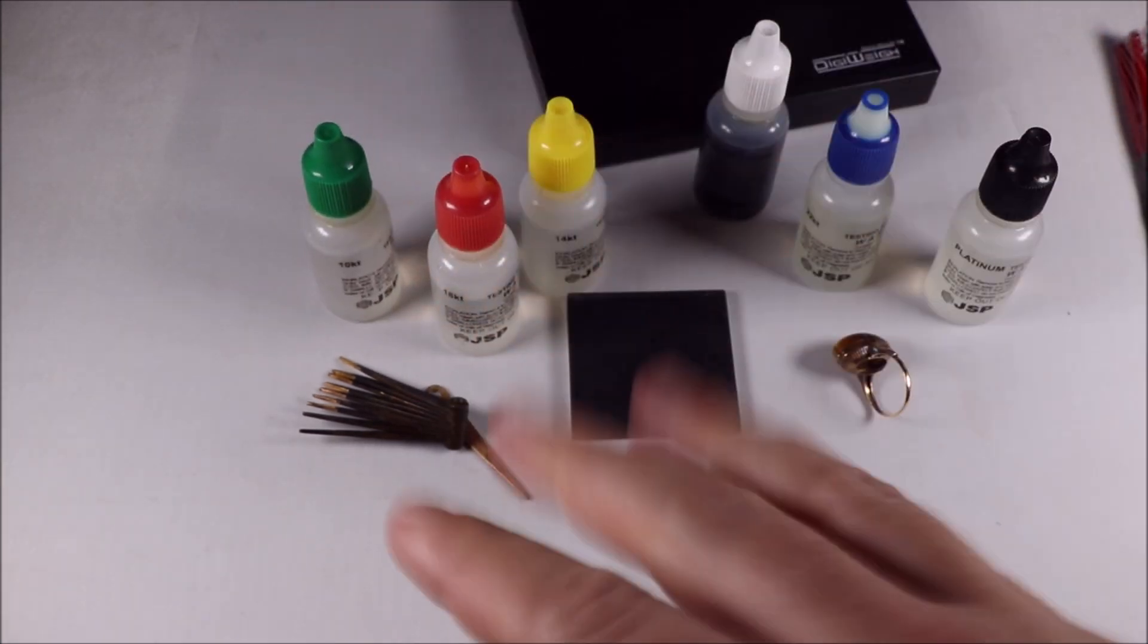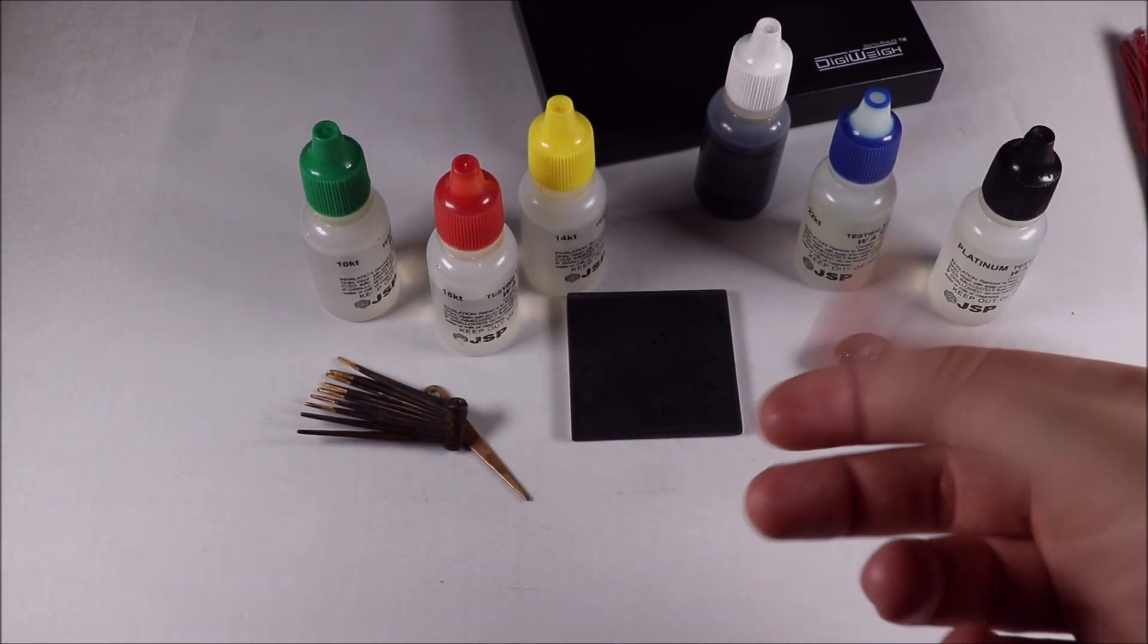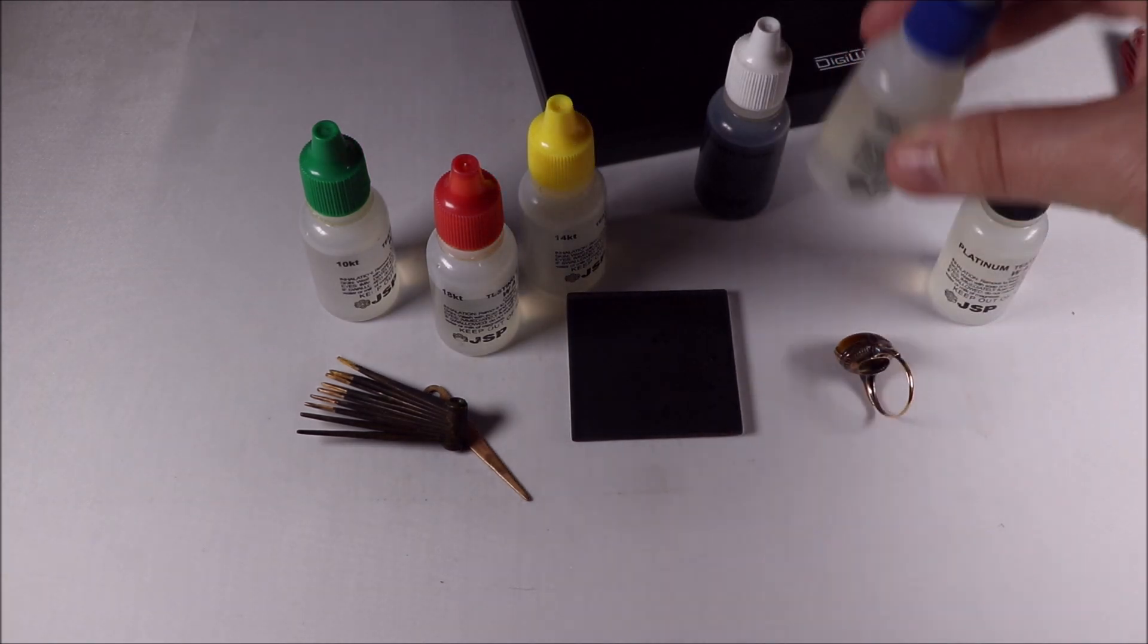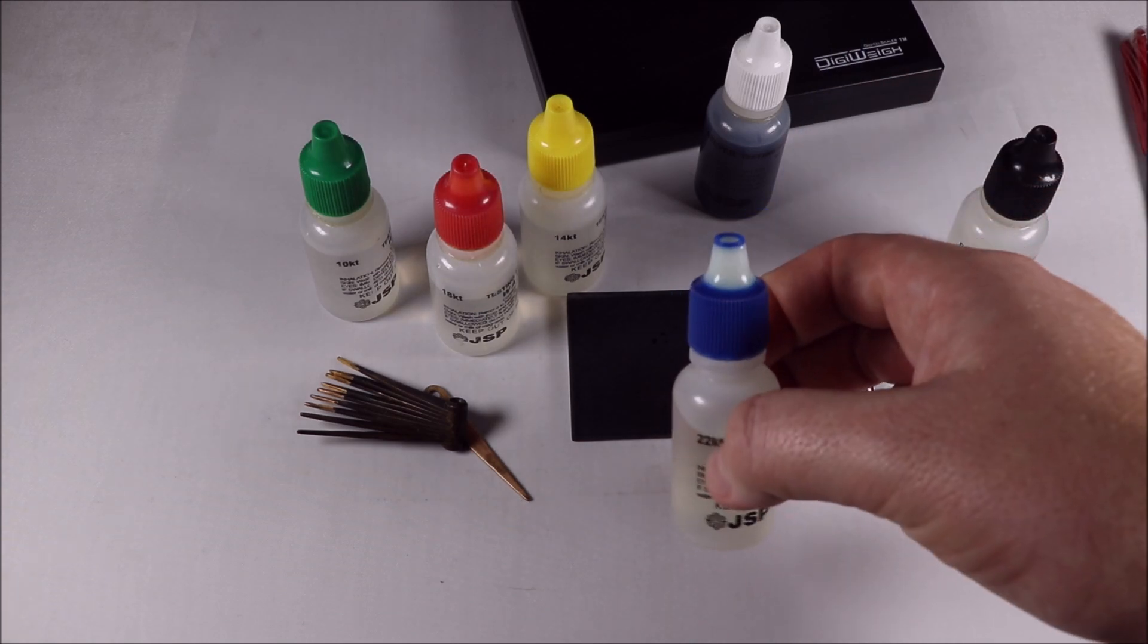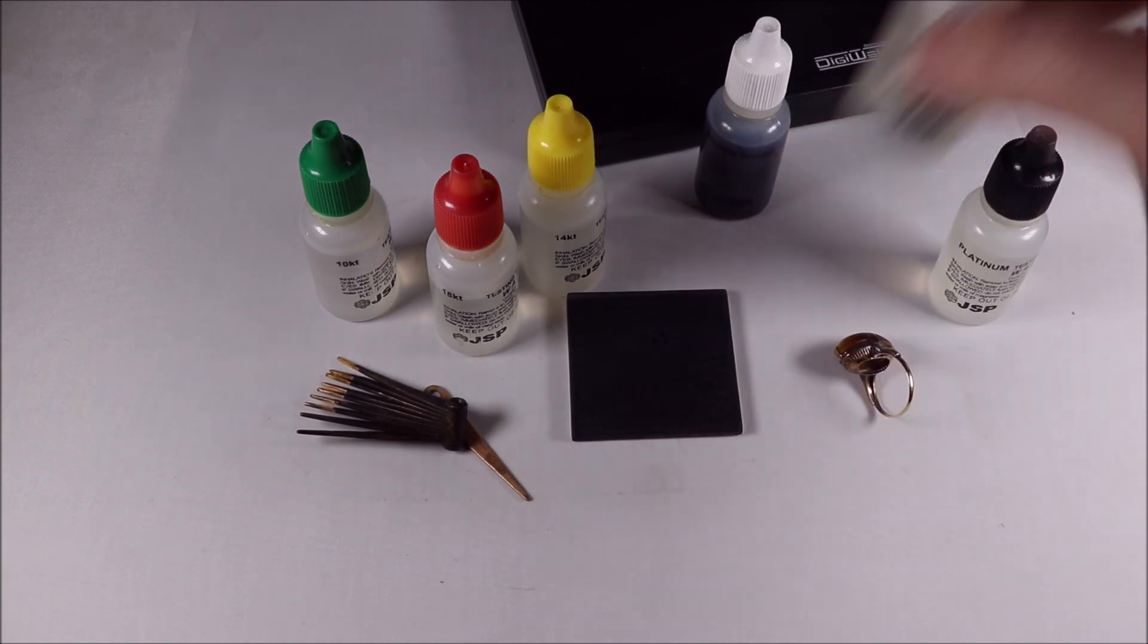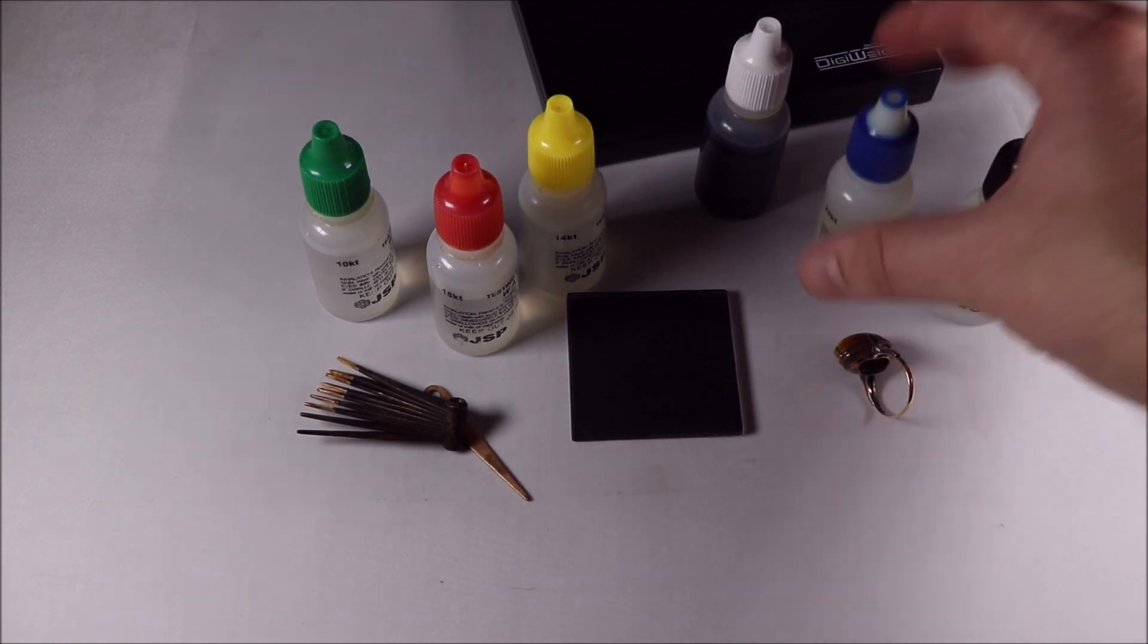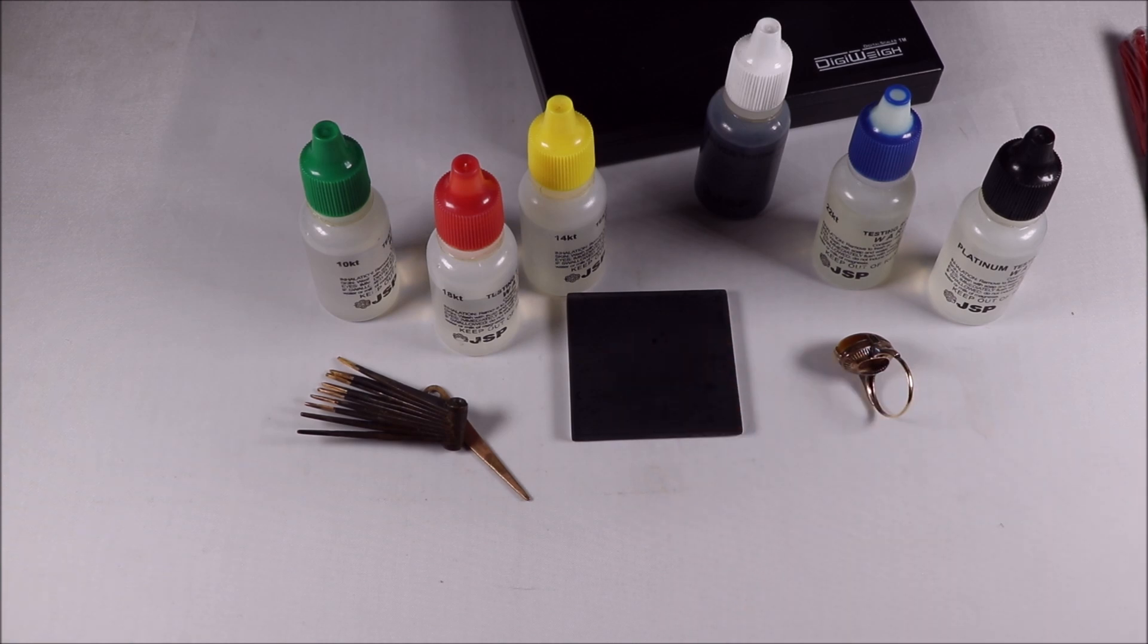You typically want to be wearing gloves. I don't have any right now, but this stuff will stain your fingers, stain your concrete, stain just about everything. You can see here on the 22 karat, the acid is very strong and starting to eat away at the cap, so eventually this whole cap will dissolve from the acid inside. You want to replace your acids every six months to a year. I'm going on close to a year with this set, so I'll be replacing it soon.